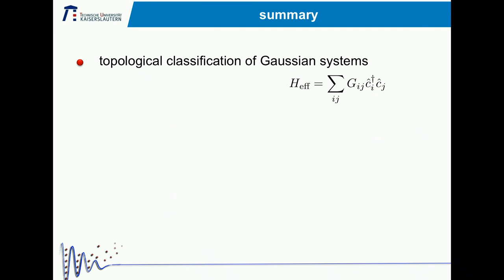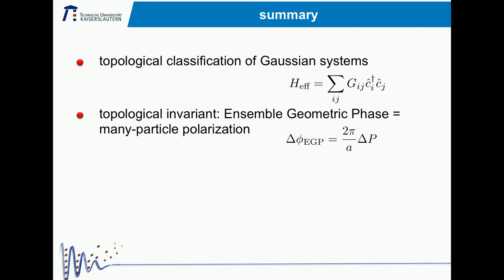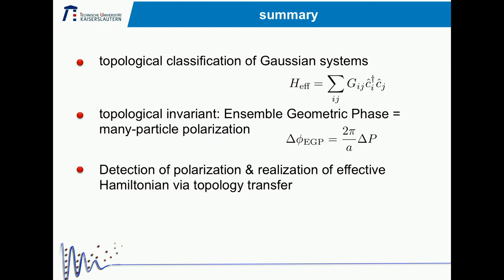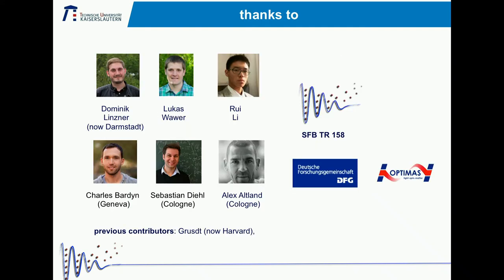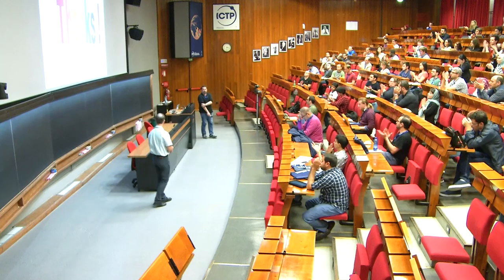To summarize: Gaussian fermionic systems at finite temperature or in non-equilibrium can be classified by an effective Hamiltonian whose Hamiltonian matrix is the single particle correlator. We can introduce a topological invariant related to the polarization of the ground state of this Hamiltonian, and I have shown how to detect the polarization or how to realize this effective Hamiltonian via topology transfer. I would like to thank the people involved: Dominik Linzner, Lucas, and Will in my group, and our collaborators Charles, Sebastian, and Alex, as well as previous contributions from Dr. Gast. Thank you for your attention.